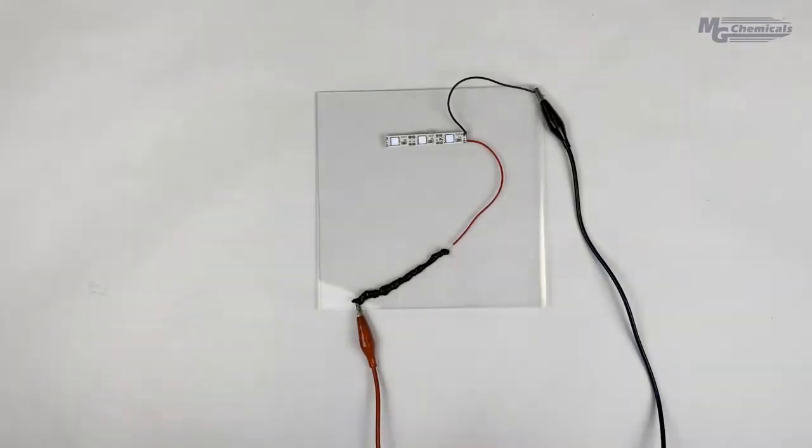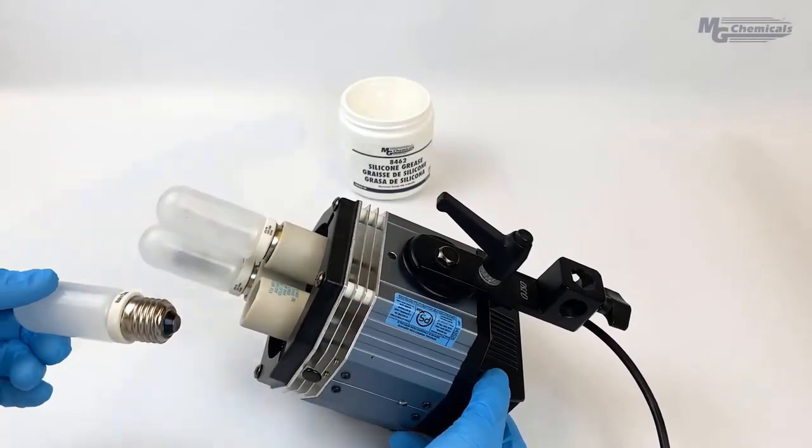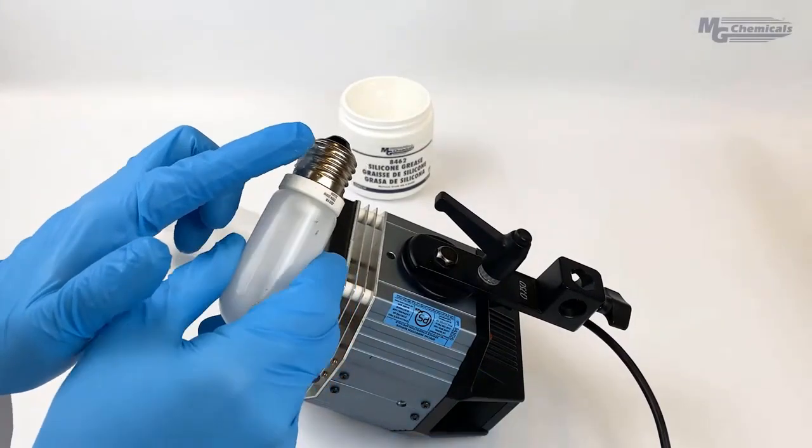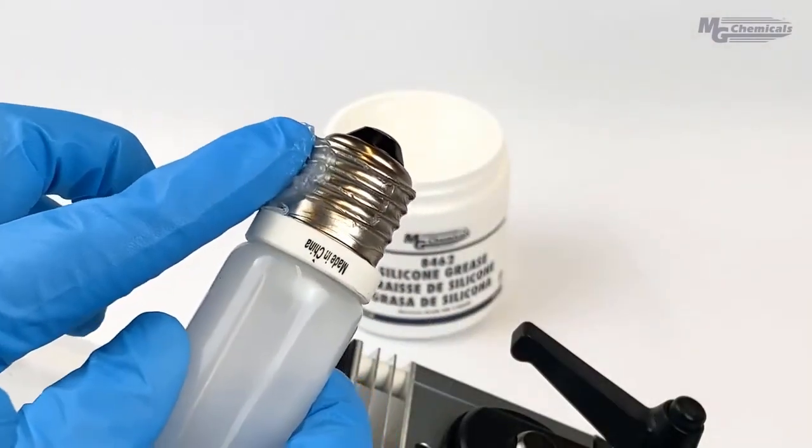Here's another example of how dielectric grease helps prevent moisture intrusion. Simply add a generous layer of grease around the threading of a standard light bulb so water stays out and doesn't cause a short.